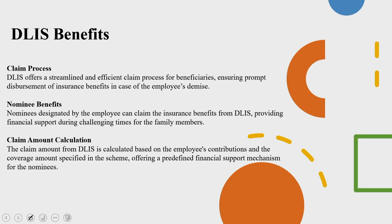When you look into the benefits and process of DLIS specifically, the claim process is streamlined and efficient for beneficiaries, ensuring prompt disbursement of insurance benefits in case of the employee's demise. The steps include initiating the claim with required documents: the death certificate of the deceased EPF member, nominee declaration, bank account details of the nominee for claim disbursement, and any other documents specified by concerned authorities. The employer forwards the claim application and supporting documents to relevant authorities; upon verification and approval, the claim amount is disbursed to the nominated beneficiary.